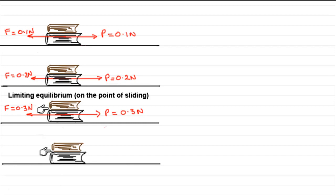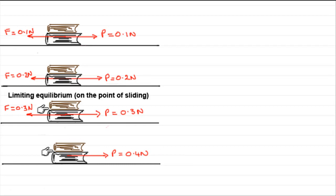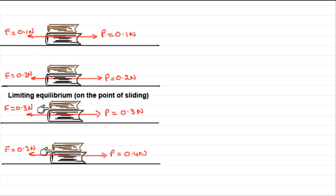Now let's say you push a little harder with a force of 0.4 newtons. Then what happens to the books? Well, they start to move forward. Why is this? There must be more force acting on the books in the forward direction than in the opposite direction. We know that friction reached a maximum here of 0.3 newtons, and it stays at that maximum value of 0.3 newtons. So we have a forward force of effectively 0.1 newtons — 0.4 minus 0.3 — and that's why those books start to move forward. Friction builds up and up until it reaches its maximum.